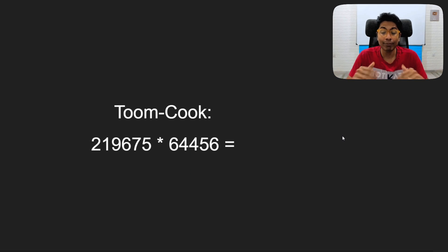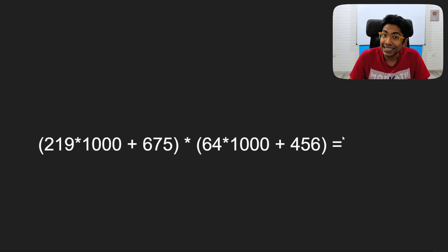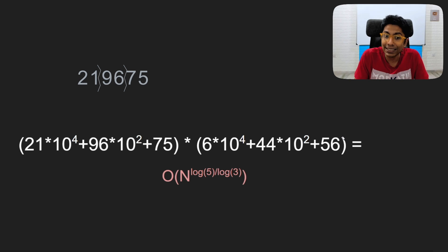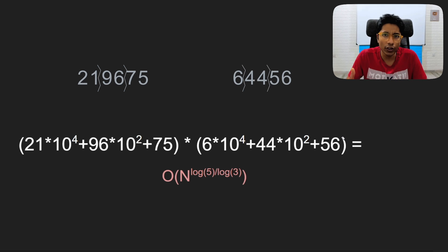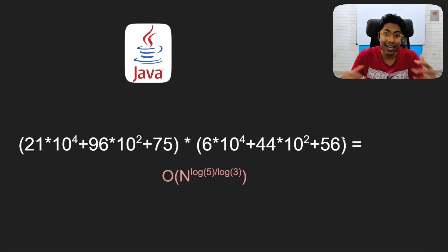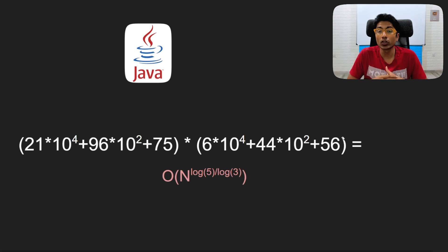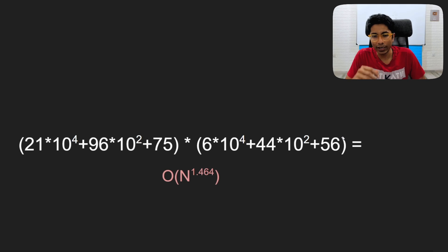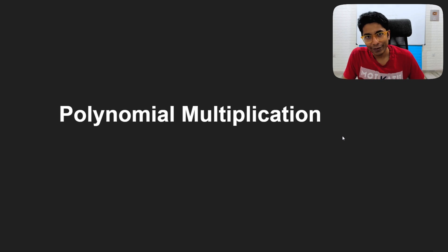This was further improved by Toom and Cook — the Toom-Cook algorithm. Instead of breaking a number into two pieces, you break it into multiple pieces. For example, 219675 is broken into three pieces: 2, 196, and 75, each with their own power of 10. If you break into smaller and smaller pieces, overall time complexity reduces. Java's BigInteger uses Karatsuba for medium numbers and Toom-Cook for large numbers, which has a time complexity of approximately n^1.464.